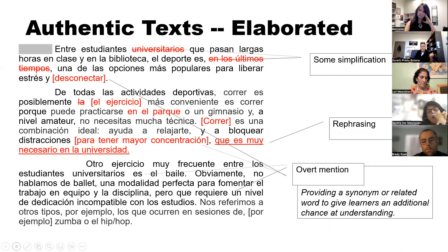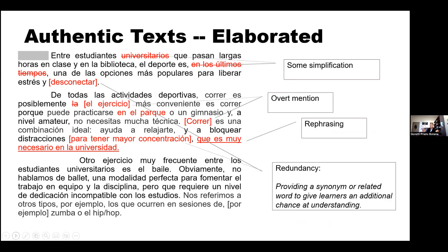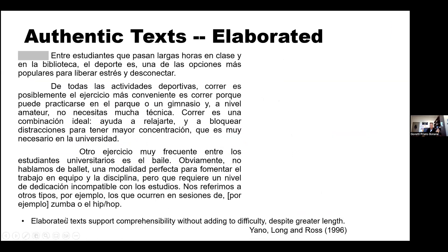Or maybe you rephrase something, avoid overusing pronouns, and opt for mentioning things overtly rather than through pronoun use. This is fairly intuitive — whether you've read the literature formally or developed an instinct. Elaborated texts improve comprehensibility without adding to difficulty, despite sometimes having greater length. I feel like we all end up doing this, whether because we read about it or have a gut feeling about it.